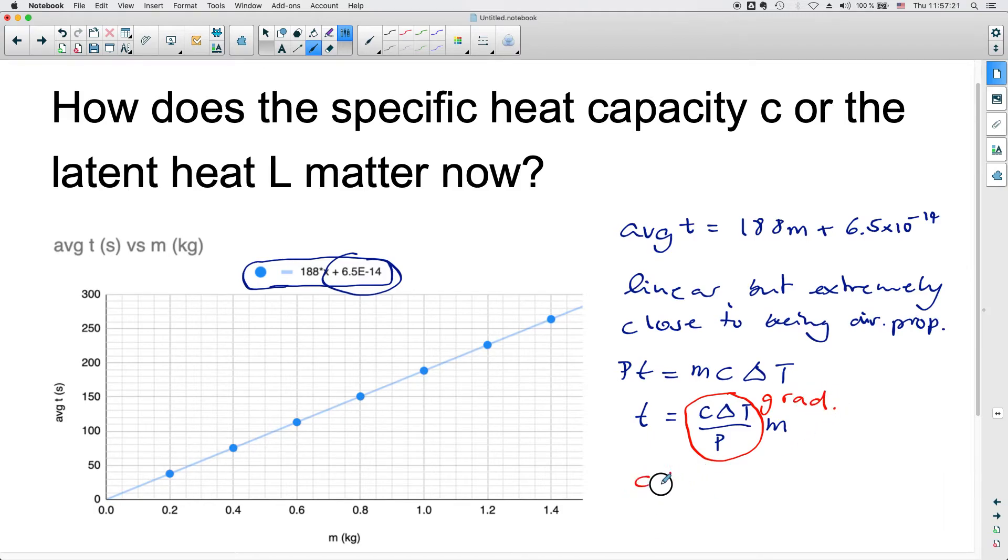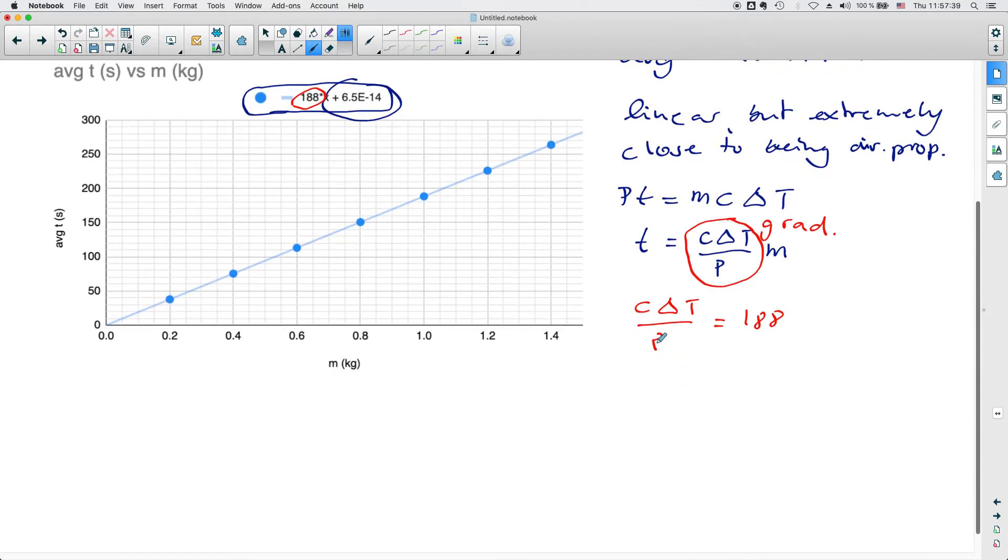And that means that c delta t over p will be equal to this value here, because that's my gradient. So this would be equal to 188. So if you have noted down what your values are, then you can actually work out what c is based on this. So c, if I rearrange this, is 188 times the power divided by delta t. So you would have written this in your criterion b part, in the design part of the lab.